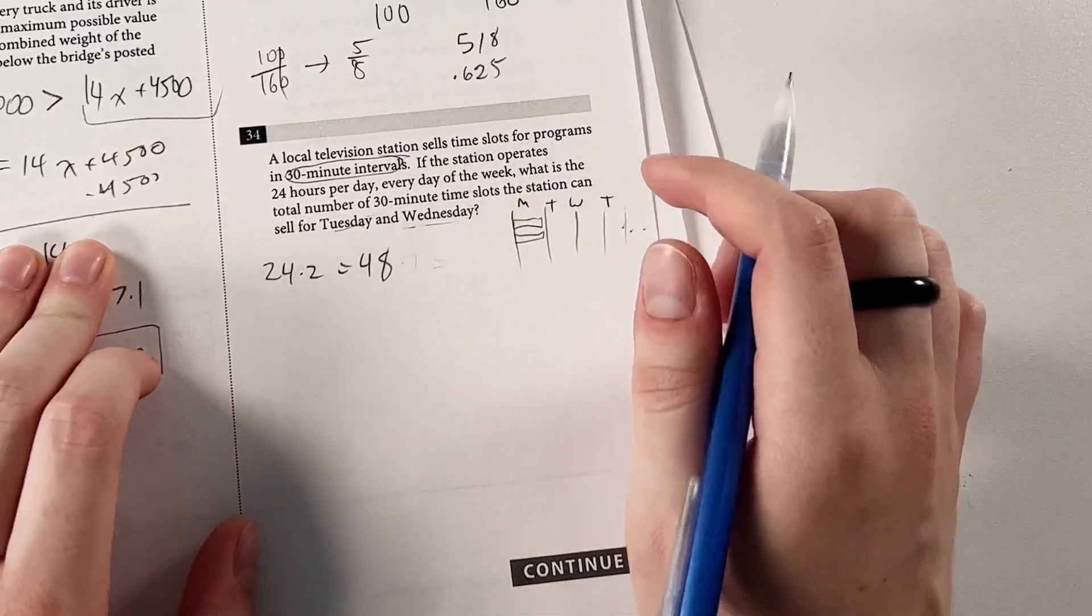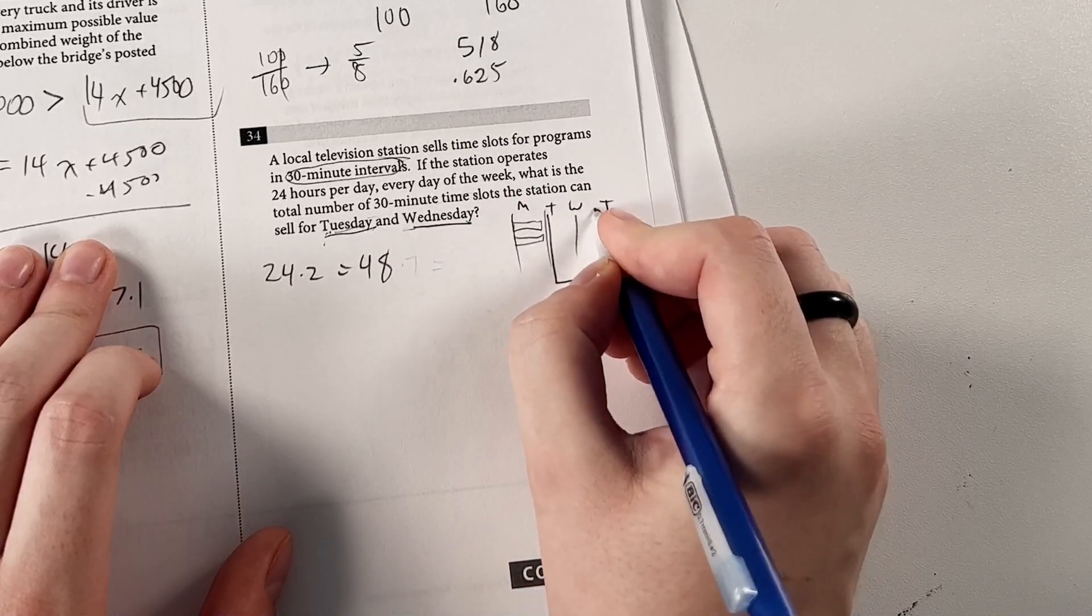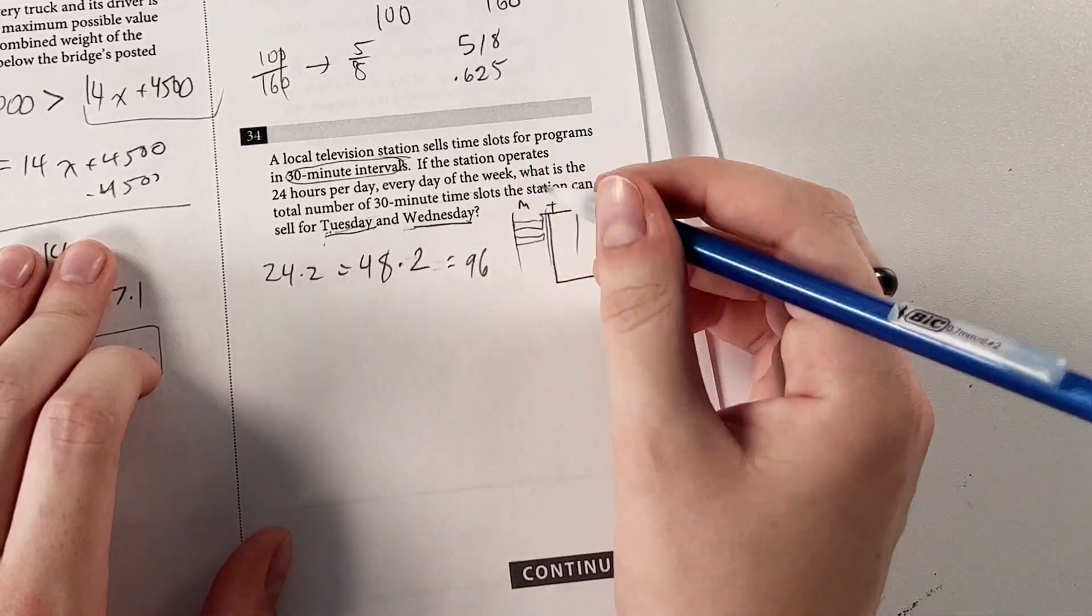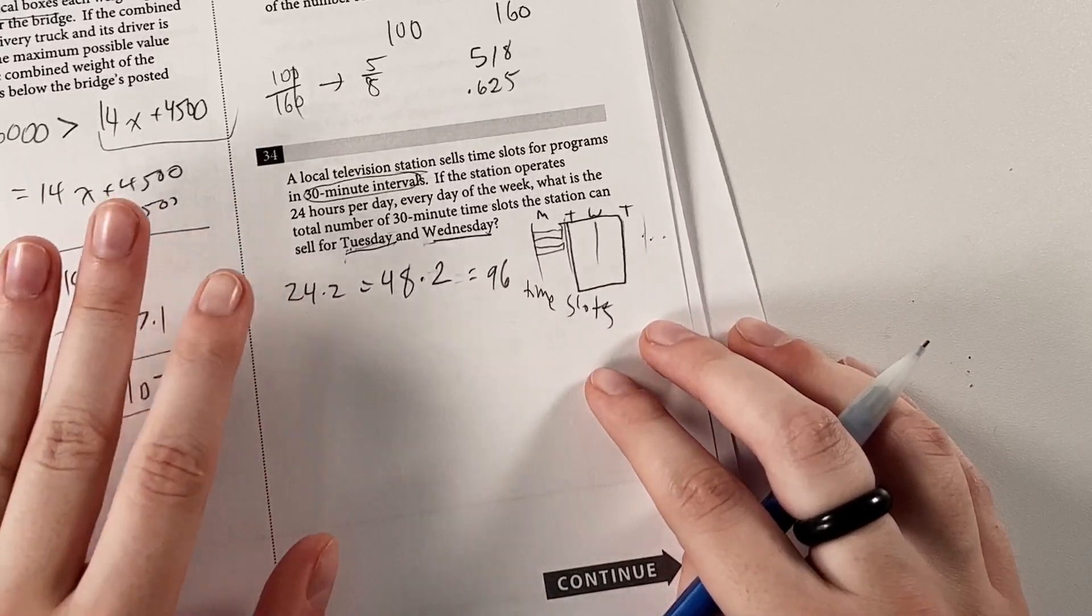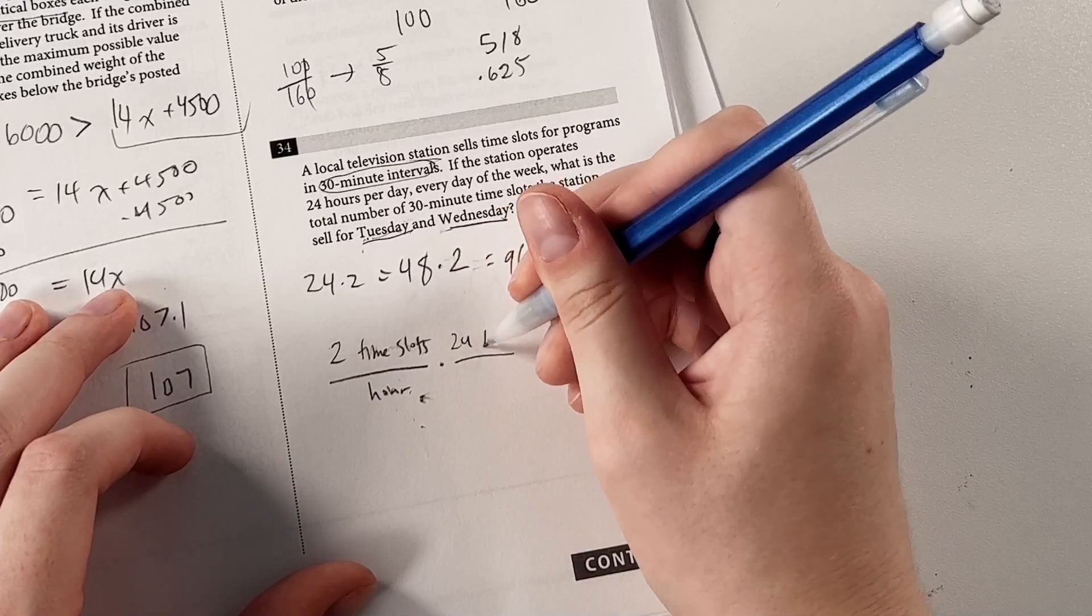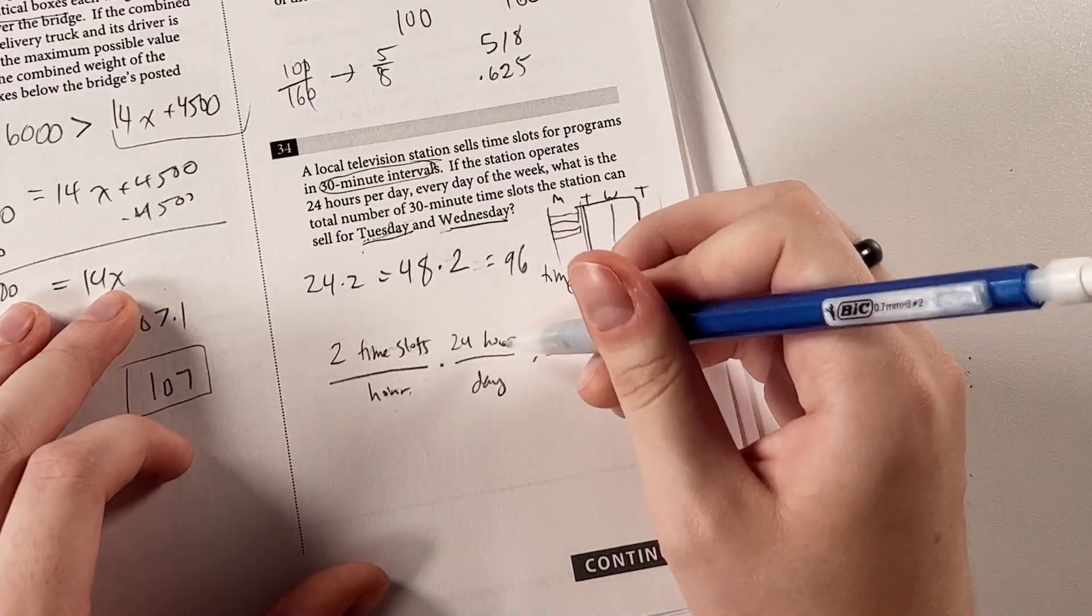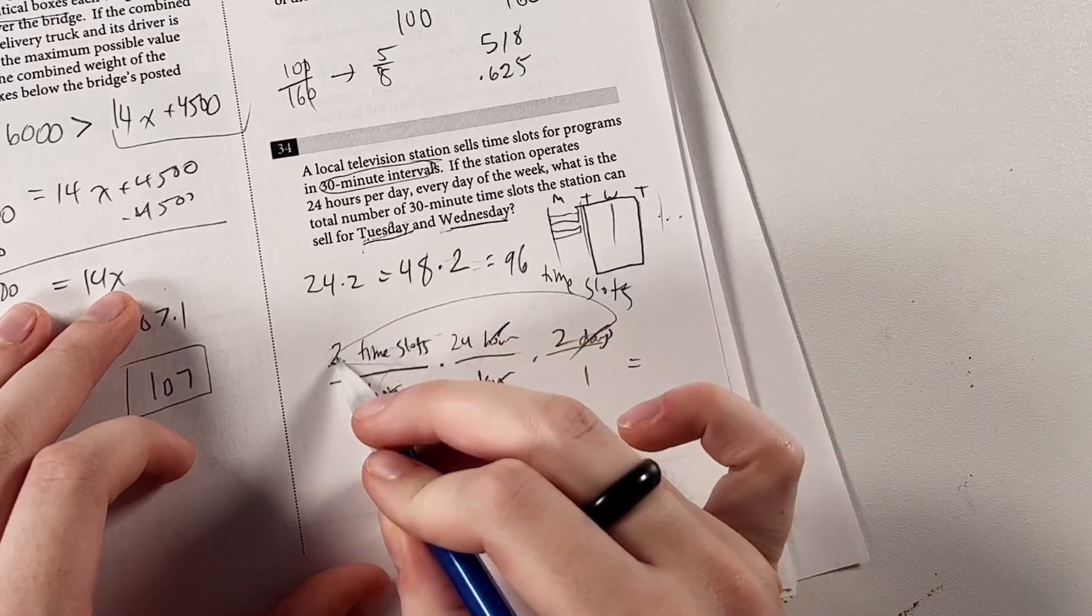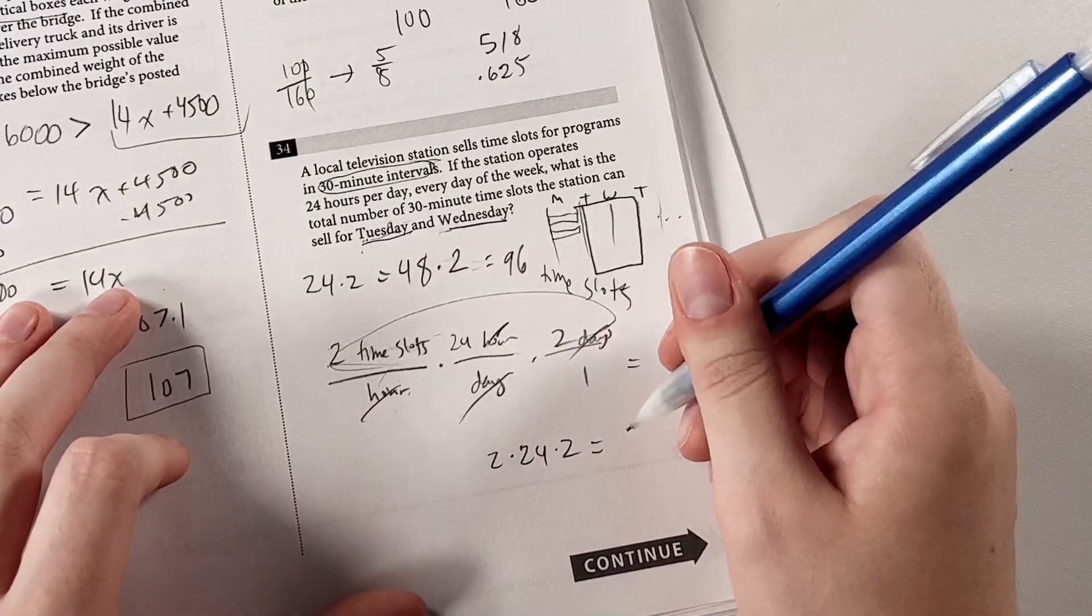So we know that the station operates every single day, so we don't have to worry about that, but we're looking for specifically Tuesday and Wednesday together. We have two days worth of time slots. We can just multiply this by two to get 96, and that's how many time slots are available. If you don't like doing it all willy-nilly like this, you can set up dimensional analysis to help check yourself. We'll say two time slots per hour times 24 hours per day. Then we have two days, because we're looking at Tuesday and Wednesday. And we see the hours are going to cancel out, the days are going to cancel out, and we're left with this many time slots. So that would be two times 24 times two, which is the same thing that we did, and we get 96.